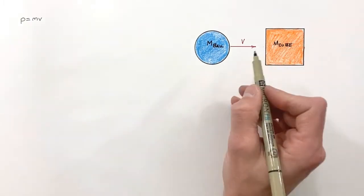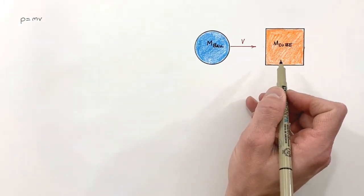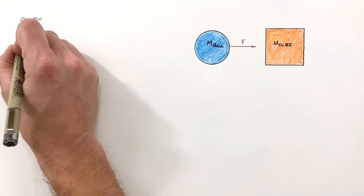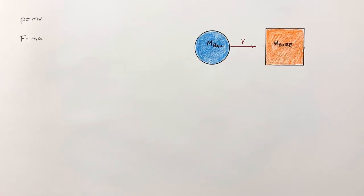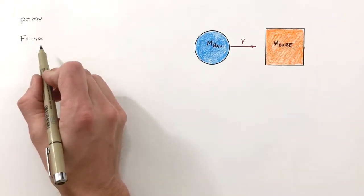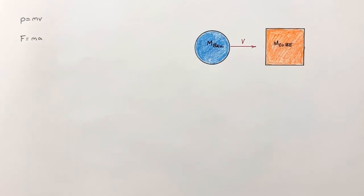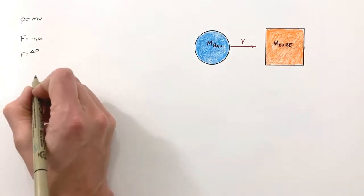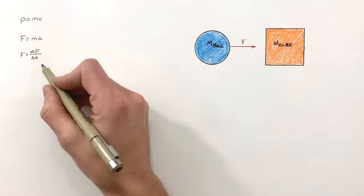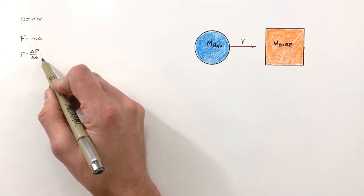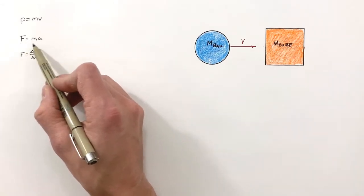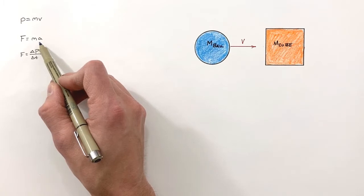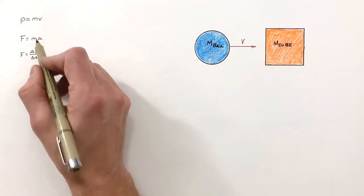To understand exactly how momentum applies to collisions, we need to go back and talk about Newton's second law. We've all seen it before as force equals mass times acceleration, or really net force equals mass times acceleration. But the reality is Newton didn't write the second law this way. What Newton said was the force on an object is responsible for creating a change in momentum over a change in time. We've simply taken his law and boiled it down into F equals MA, which is easier to understand, but that's not really what he wrote.